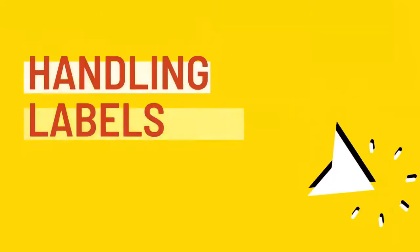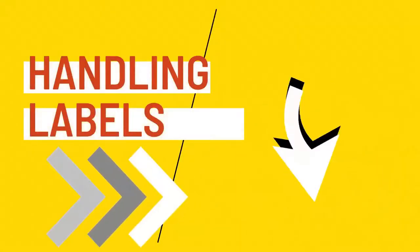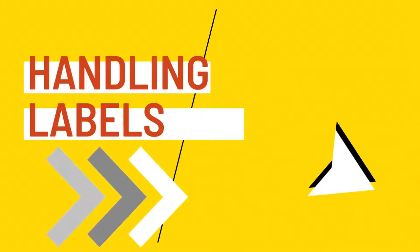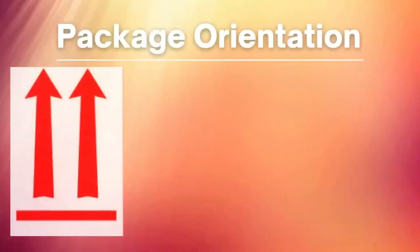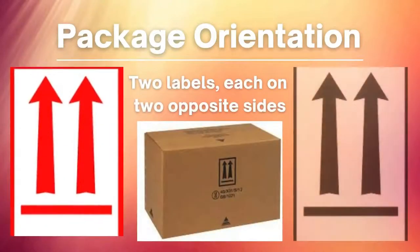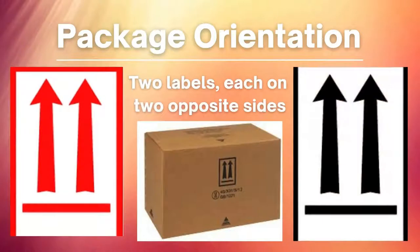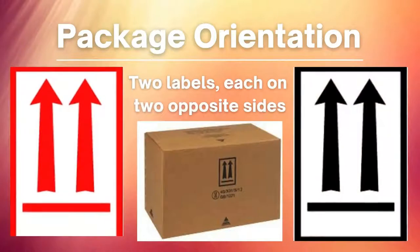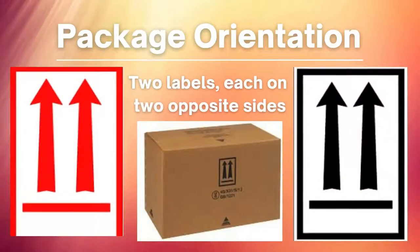That's all about hazard levels. Now we will discuss handling levels. This one is the Package Orientation label. It is used for liquids in combination packaging.